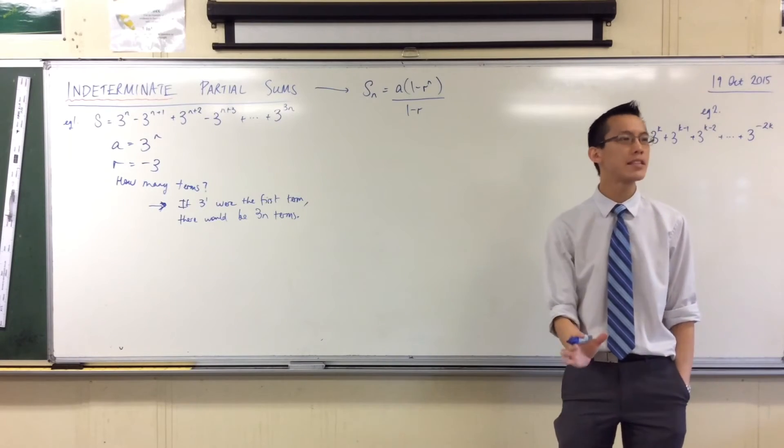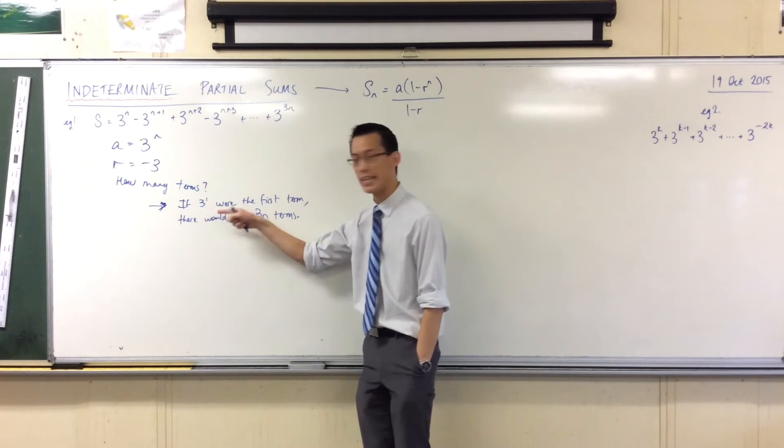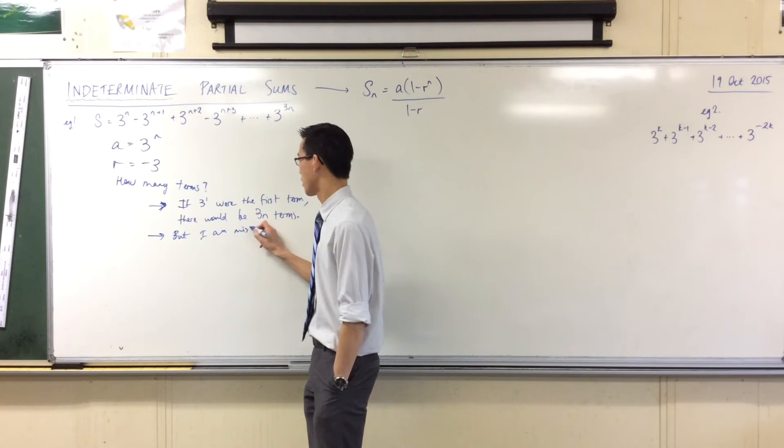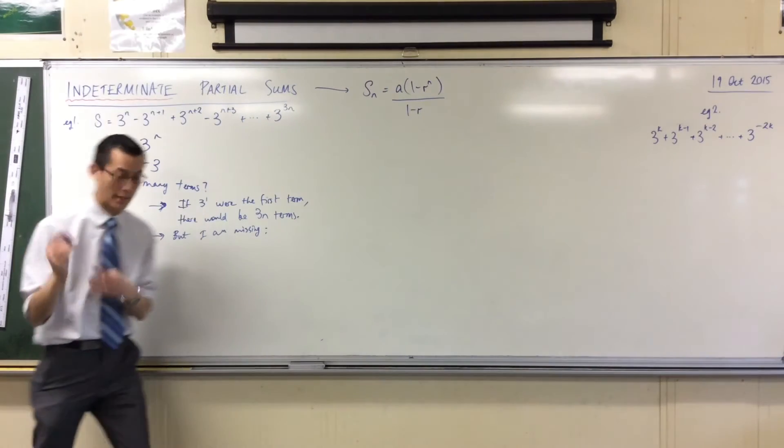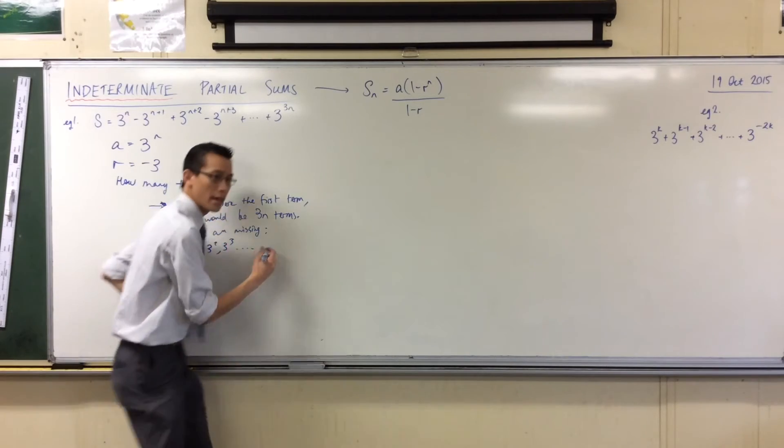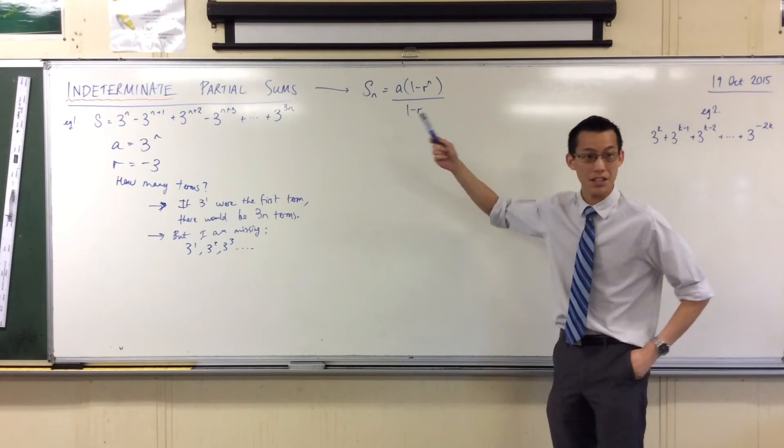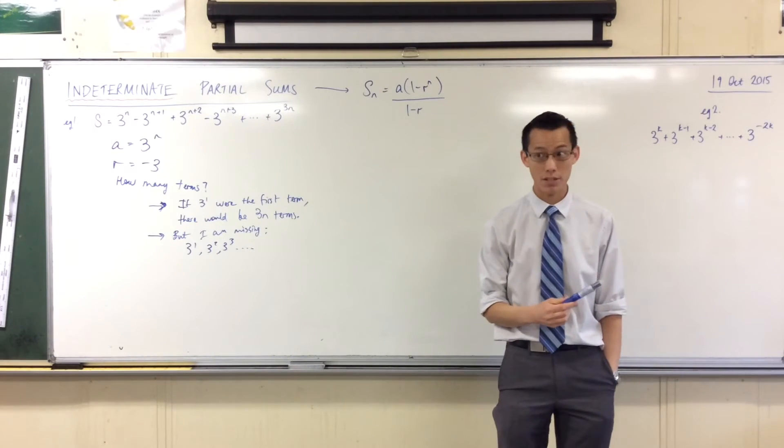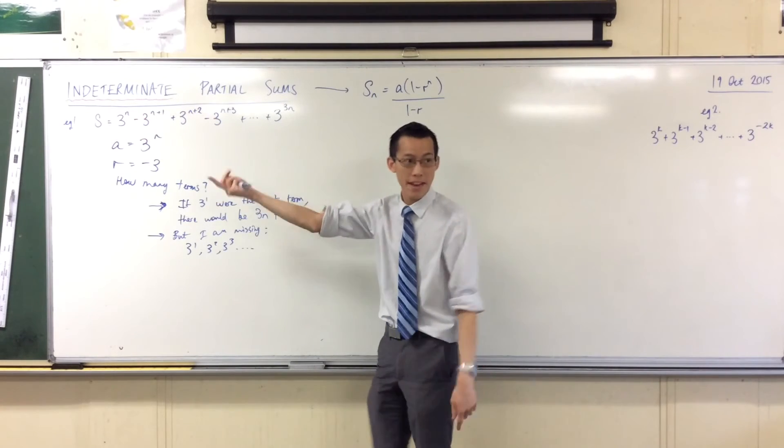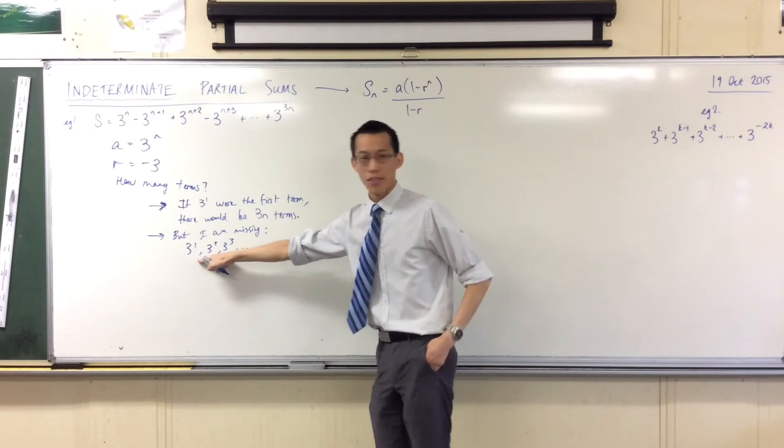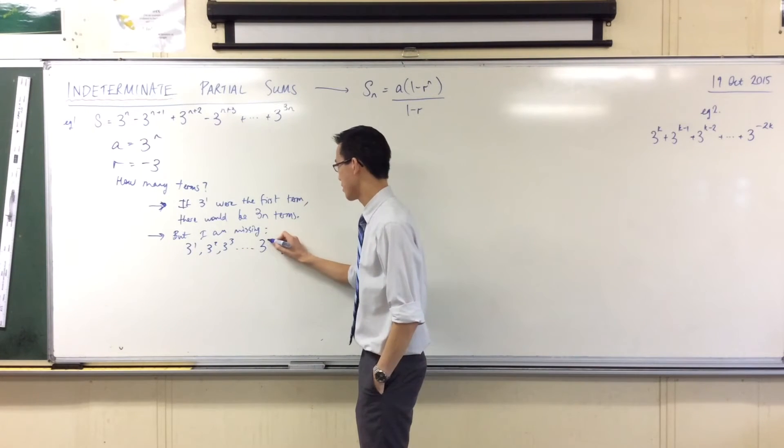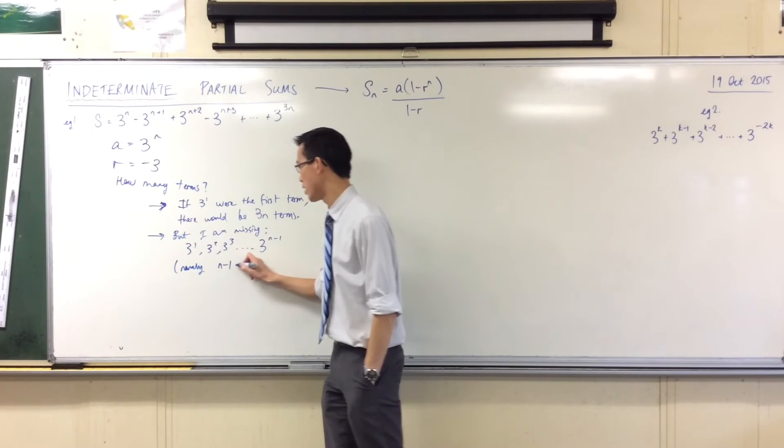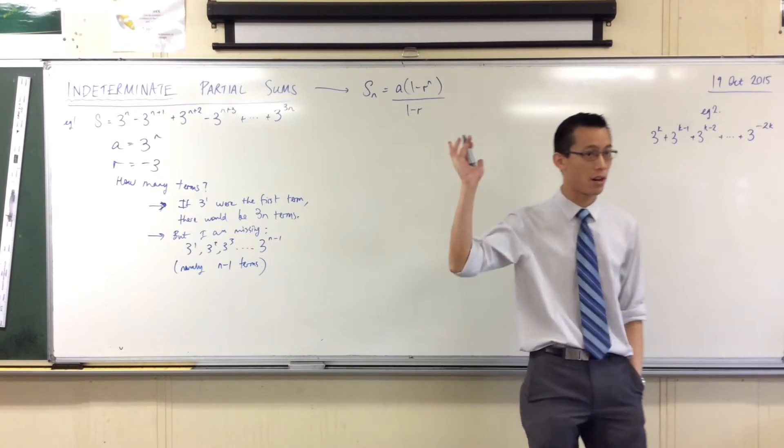So that's what would be the case in a simple kind of situation. But that's not the situation. I'm missing a whole bunch of terms off the beginning of here, because 3 to the 1 is, in fact, not my first term. How many terms am I missing? What are the actual terms I'm missing? The ones I began with, 3 to the 1, 3 squared, 3 cubed, dot, dot, dot. Now, what's the last term that gets dropped off to get the series that I actually want? What is the immediately preceding term right here? It'd be 3 to the n minus 1. Do you see that? Because then the next one, because I'm just going up by 1 each time, then the next one will be 3 to the n, the one that I actually start with. So therefore, the last term that I'm missing is 3 to the power of n minus 1.